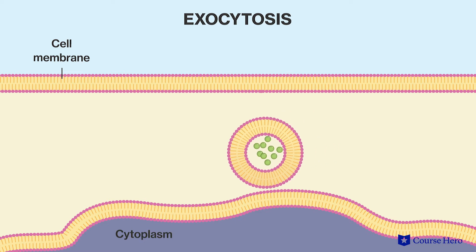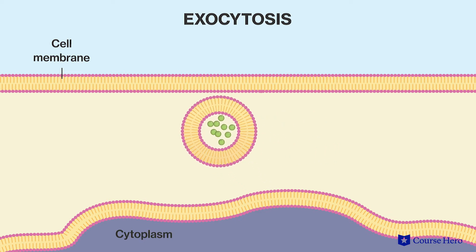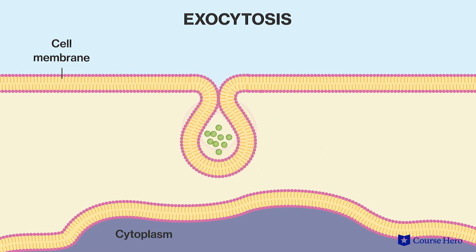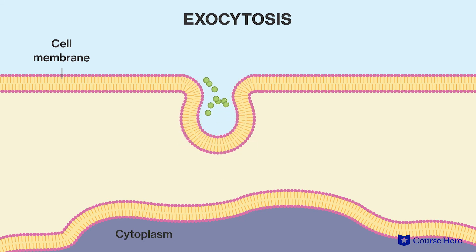The vesicle travels to the cell membrane and fuses with the interior side of the cell membrane. The contents of the vesicle are then released to the environment.